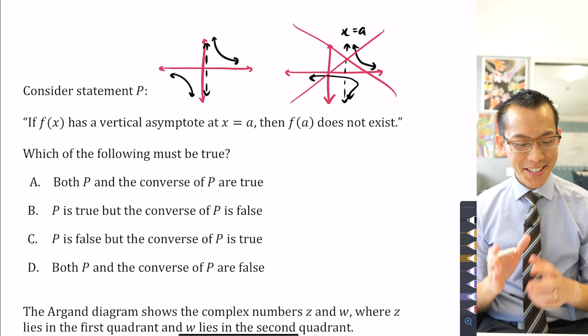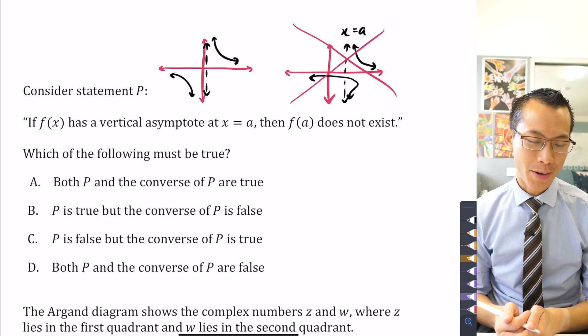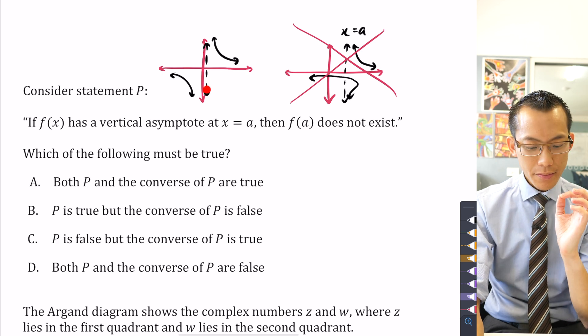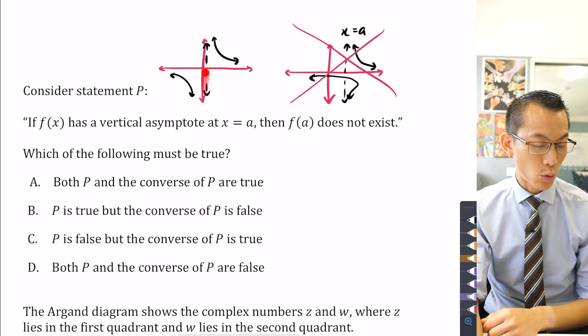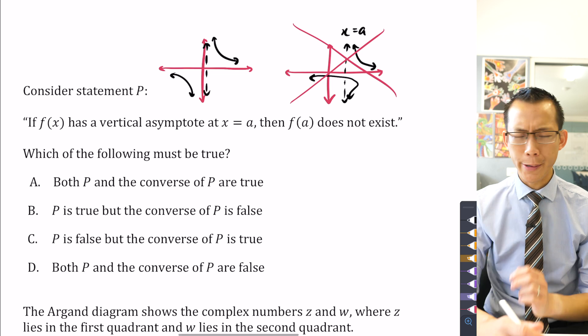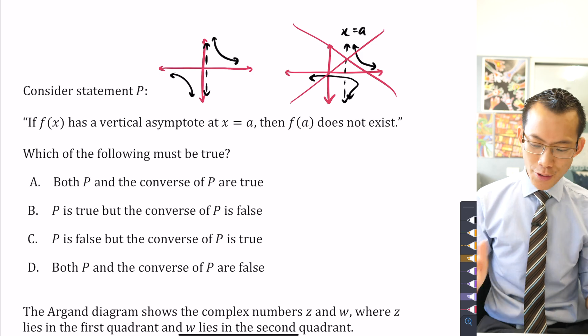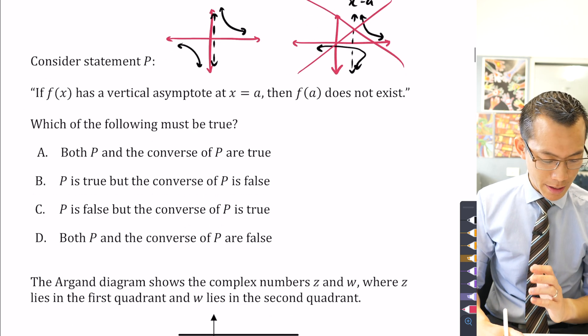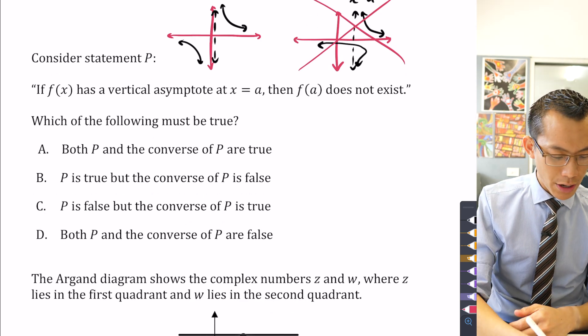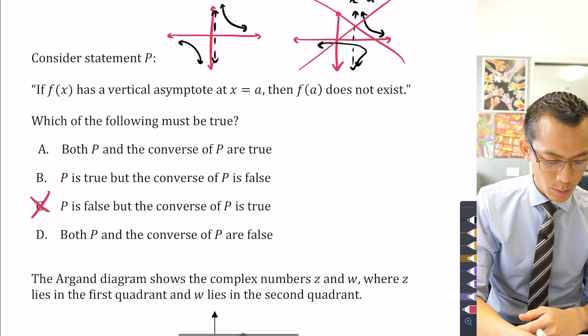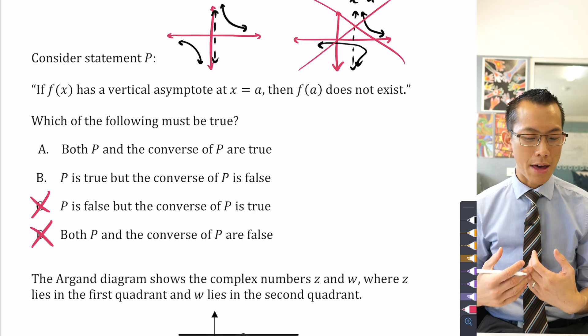So what that means is statement P is always going to be true. If you have a vertical asymptote on a function, there's no way that x equals a, in this case x equals zero, there's no way it can exist. It's going to be excluded from the domain. Okay, so what that does is it tells me P is true. So any of the options where P is false, I can exclude. So P is false in this one, P is false in this one. So it's just going to be either a or b.